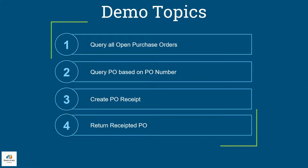Let's take a look at the topics we are going to cover in this run-through. First, querying all purchase orders based on the user that is logged in to the Simplified Loader Excel template. Second, querying purchase orders using single or multiple PO numbers. Third, creating a purchase order receipt directly in Excel to Oracle, which we will see once an open purchase order is displayed in the Simplified Loader sheet. The Excel sheet allows for partial receiving of a purchase order or receiving the full purchase order amount. And lastly, the fourth topic is returning goods to the supplier.